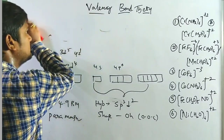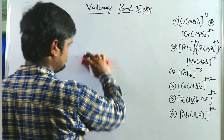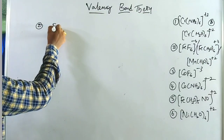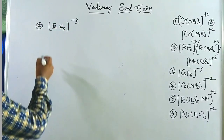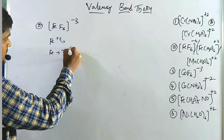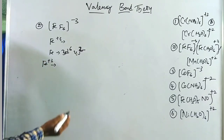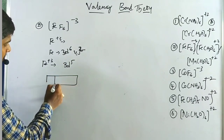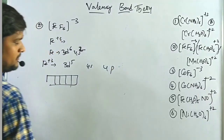Now let us discuss the second example: [FeF₆]³⁻. These examples come from d⁵ configuration. Fe is in the +3 oxidation state. Iron's configuration is 4s² 3d⁶. Fe³⁺ means loss of 3 electrons — 2 from 4s and 1 from 3d — giving a 3d⁵ half-filled configuration. The 4s, 4p, and 4d orbitals are empty.